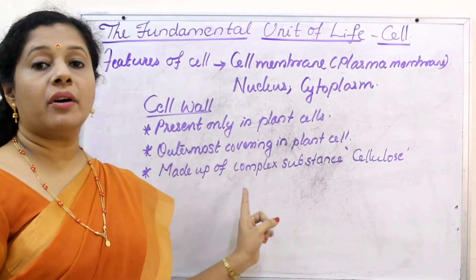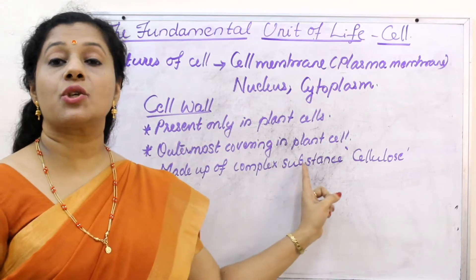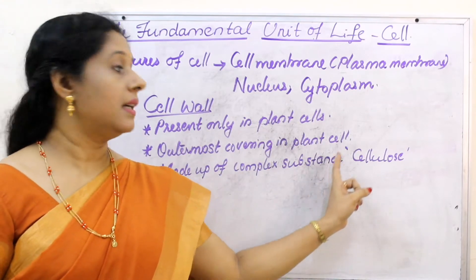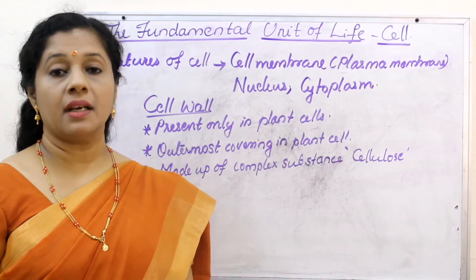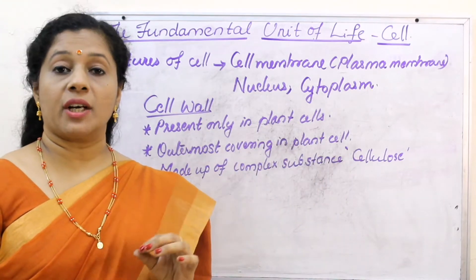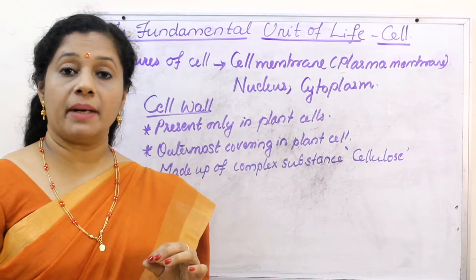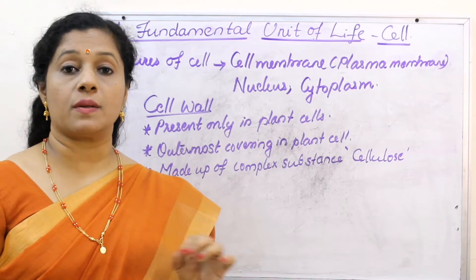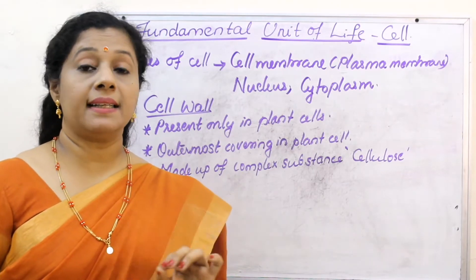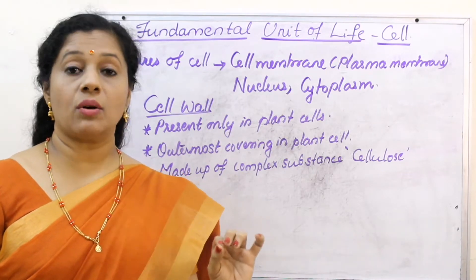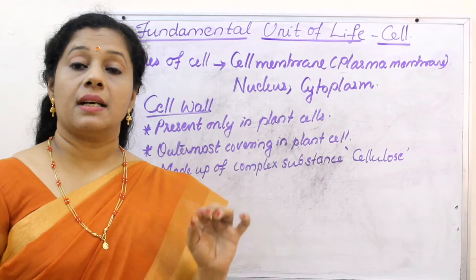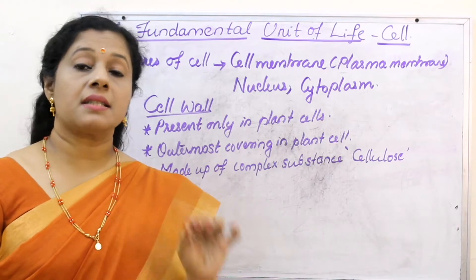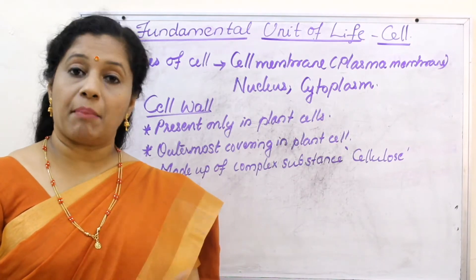Cell wall is made up of a complex sugar called cellulose. So what is the cell wall made of? Cellulose. But don't think that all cell walls are made up of cellulose, because in plants the cell wall is made up of cellulose.